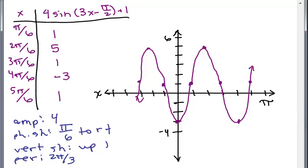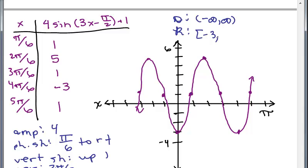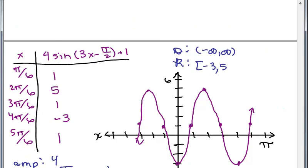Let's also write the domain and range. The domain — the values x can take on — is always the same for the sine function: negative infinity to infinity. The range goes from the lowest point, negative 3, to the highest point, 5.